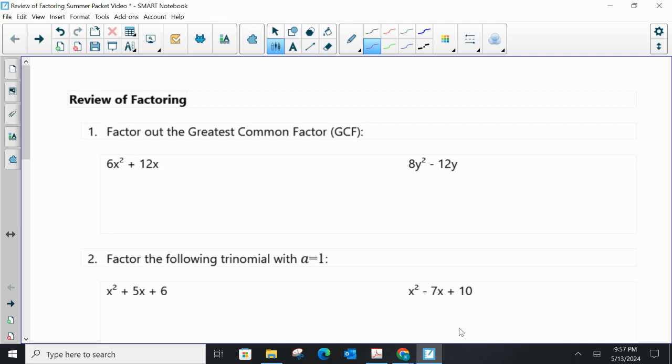To take out the GCF, you're going to look at the coefficients or the constants of each term, and you're going to first take out the biggest number that divides into both. Then you're going to look at each variable. If a variable appears in all terms, then the common factor is the variable of least degree.